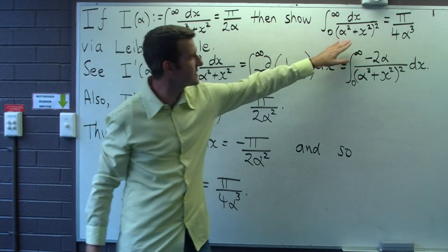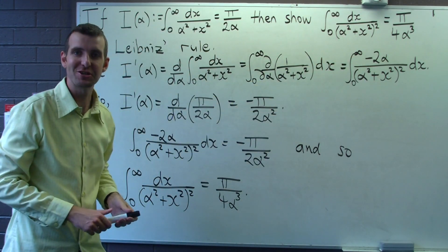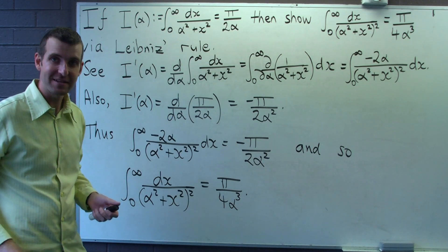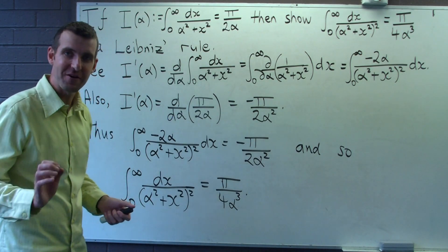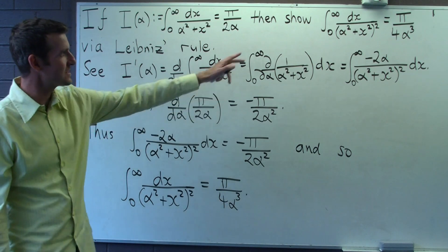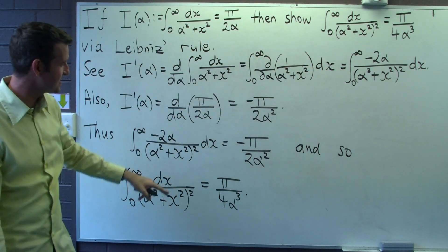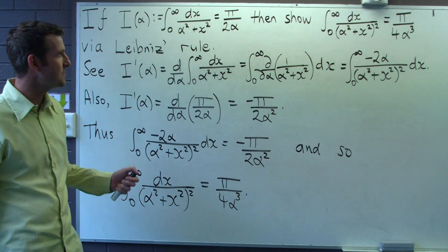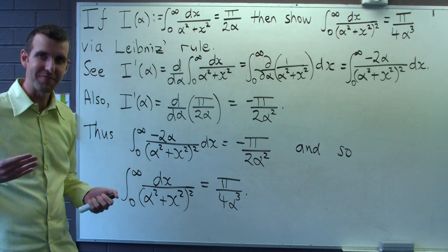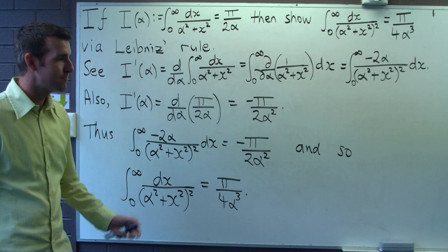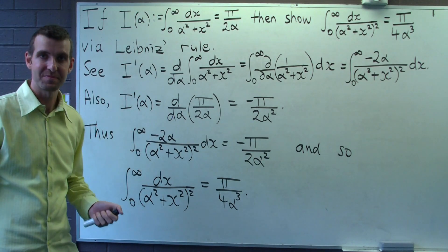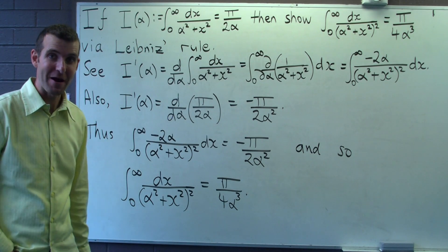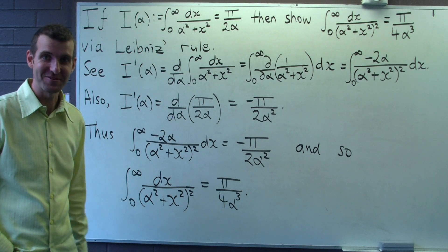Why would you use Leibnitz's rule here when you can already solve this by substitution? That's a good question. Leibnitz's rule is excellent for solving very complicated integrals — this one isn't so bad. The example is designed to give you a feel for Leibnitz's rule, but you can evaluate very difficult integrals using it. So we can solve integrals by differentiation — paradoxical, but very useful.